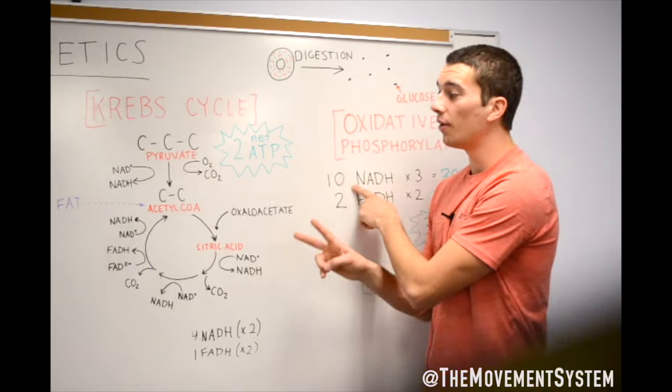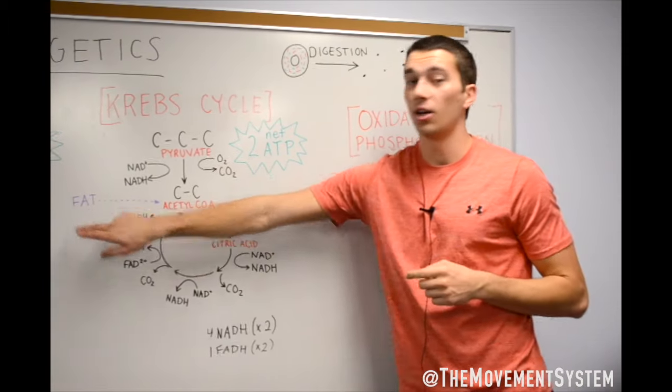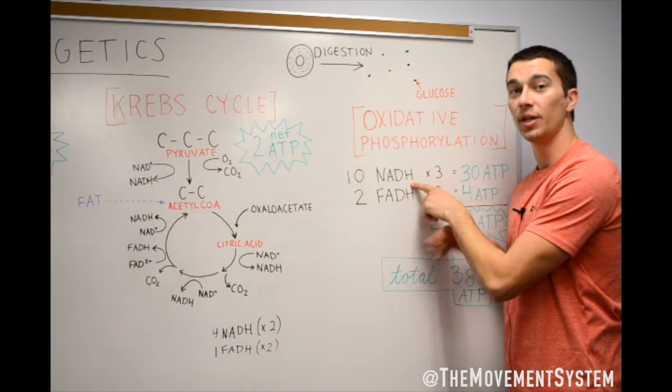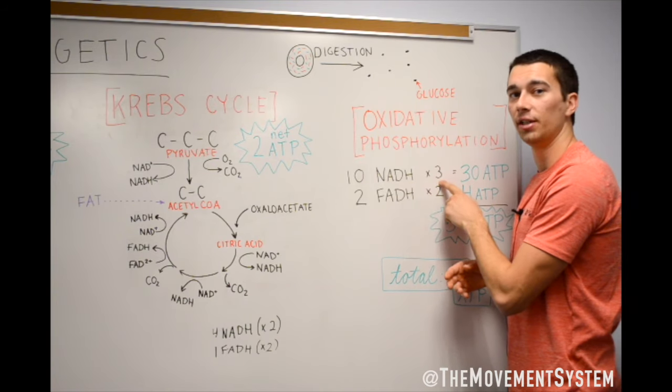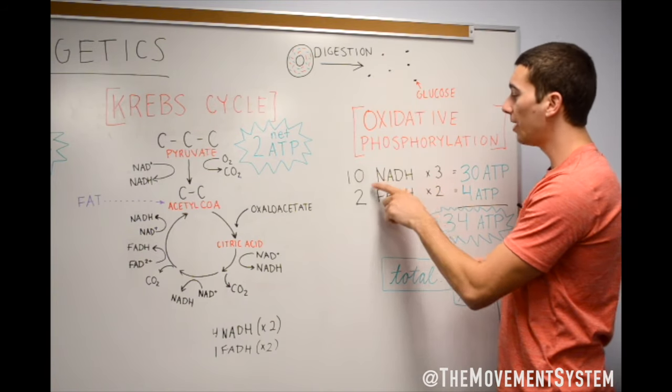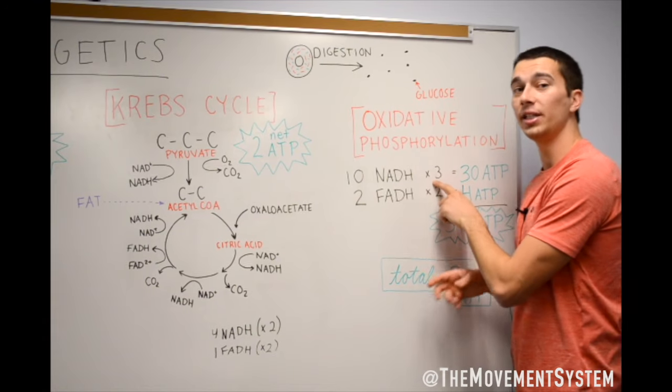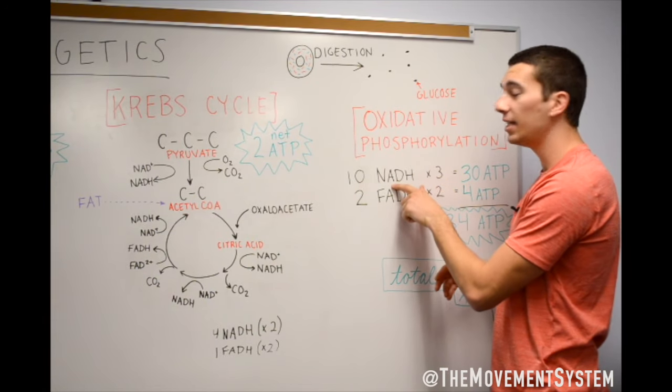And then another two of them were actually from glycolysis. So that's a total of 10 NADHs that we have that we stored up, and now we're going to turn those into energy. We're going to multiply those by three because we actually get three ATP per NADH molecule.